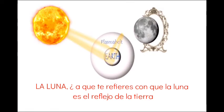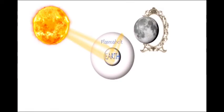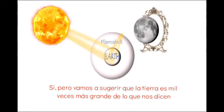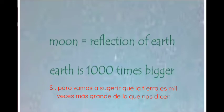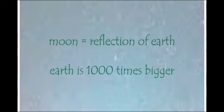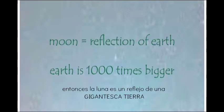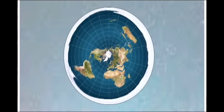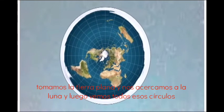What do you mean the Moon is the reflection of Earth? Where are all the rivers and the forests? Well, let's suggest that Earth is a thousand times bigger than we are told — then the Moon is a reflection of a gigantic Earth. So let's move over to the flat earth theory.